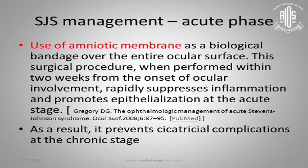Use of amniotic membrane — similar to its use in chemical burns — either directly as a biological bandage over the entire ocular surface is very effective. This can be done by taking the patient from the ICU to the operating theater and using glue with no sutures, ideally within two weeks. The earlier you do this, the more you tamp down the inflammatory process. It suppresses inflammation, promotes epithelialization in the acute stage, and tends to prevent serious complications at the chronic stage.